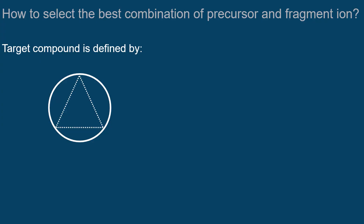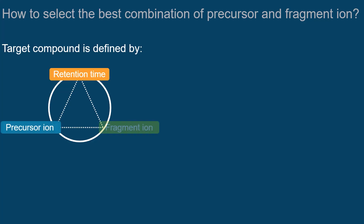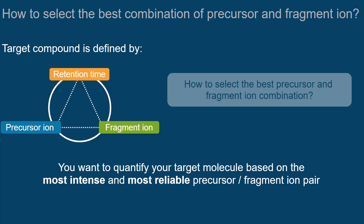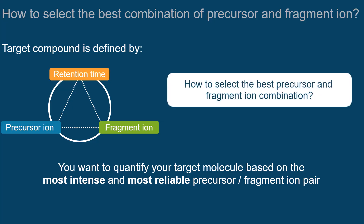We have already learned that a target compound is defined by its retention time, the precursor and fragment ion mass. To get the best quality from your MRM quantitation method, you want to quantify your target molecule based on the most intense and most reliable precursor-fragment ion pair. But how can we select the best combination of precursor and fragment ion?